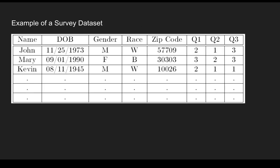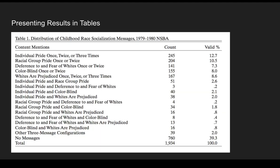A survey data set often looks like this — you'll have a row for each survey respondent and a column for each survey variable. In this data set there's name, date of birth, gender, race, zip code, and a few response questions that are coded numerically, in a format that you could import into a stats program. This is a table from a sociology journal that presents frequency counts and valid percentages across different content mentions, with a total response at the bottom — an example of what a formatted table might look like for survey analysis.